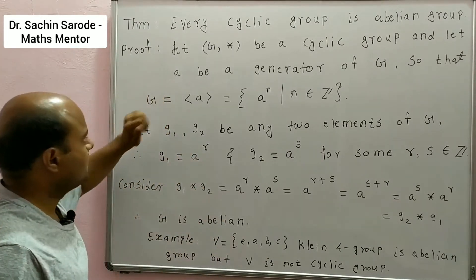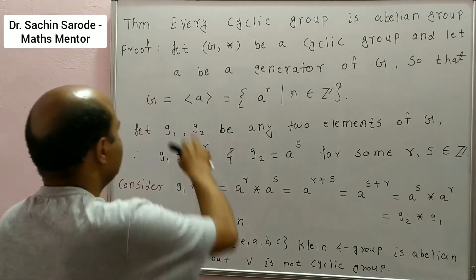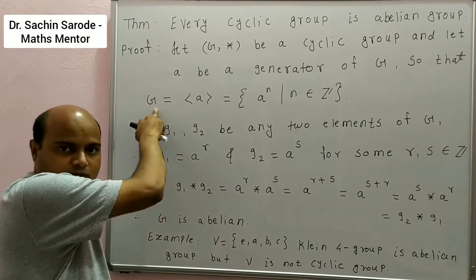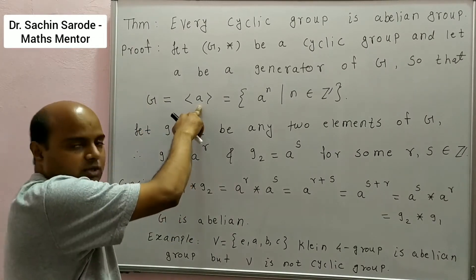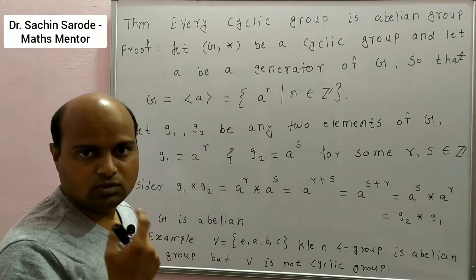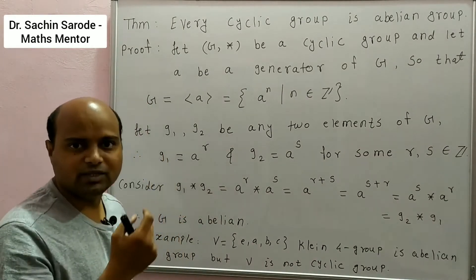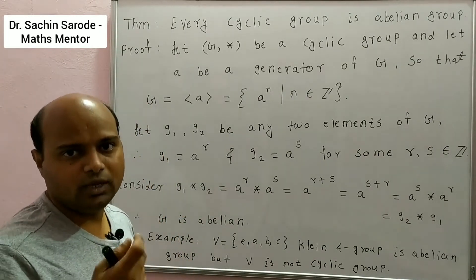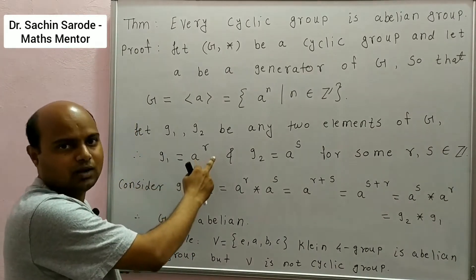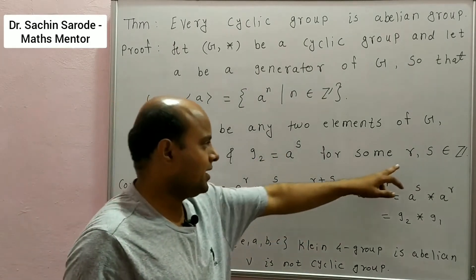We will see the proof. Let G* be a cyclic group and let A be a generator of G, so that G is equal to the subgroup generated by A, and this is the set {A^N such that N belongs to Z}, the set of all integers. Consider G1 and G2 be any two elements of G, so that G1 = A^R and G2 = A^S for some integers R and S.